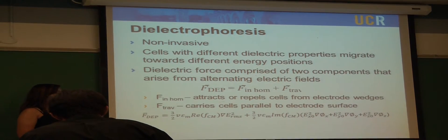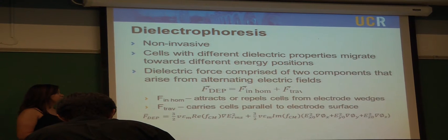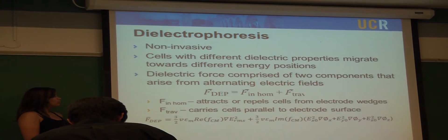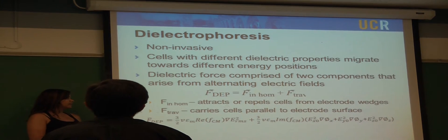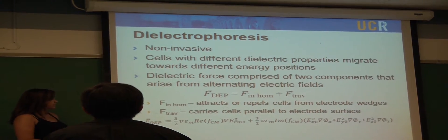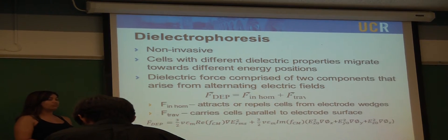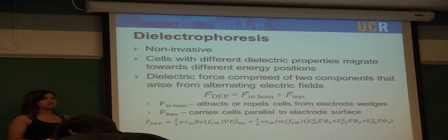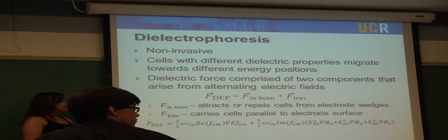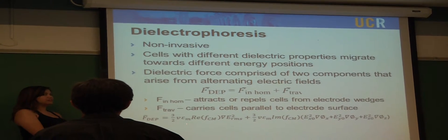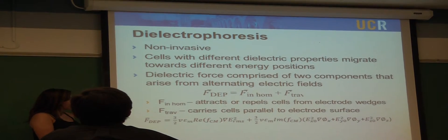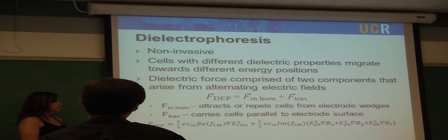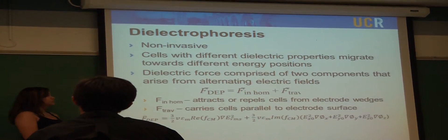You can also calculate the dielectric force, and it's comprised of two components: the force of the inhomogeneities, which is F_inhom, and F_traveling, which is F_trav. The inhomogeneities force attracts or repels cells from electrode wedges, and F_traveling carries cells parallel to the electrode surface. This is the overall equation for calculating the DEP force, where V is the volume of the particle, epsilon is the electrical permittivity of the medium, and this right here is the real component of the Clausius-Mossotti factor, which determines the electrical polarization of the cell with respect to the medium it's in. This is the electrical gradient from the alternating electric fields.